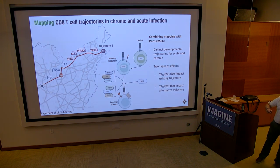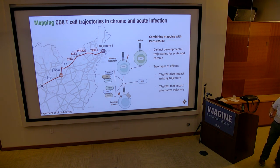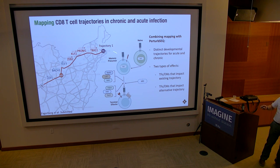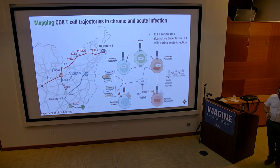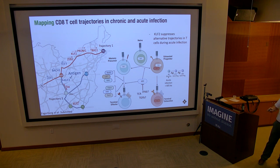Summarizing what I've told you: PerturbSeq has been very useful for understanding how different transcription factors affect differentiation trajectories. Most of the knocked-out genes — from a very selected list — affected where along the natural trajectory of differentiation the T cell fell. There were genes restricting differentiation, whose knockouts caused cells to become more differentiated, and genes promoting differentiation, whose knockouts caused cells to become less differentiated. But when we knocked out KLF2, we got something very different: cells going down toward the exhausted cell lineage. During natural infection, this is also how the process likely works — antigen and other signals in chronic infection regulate KLF2, and that's part of the mechanism restraining cells on the normal trajectory.